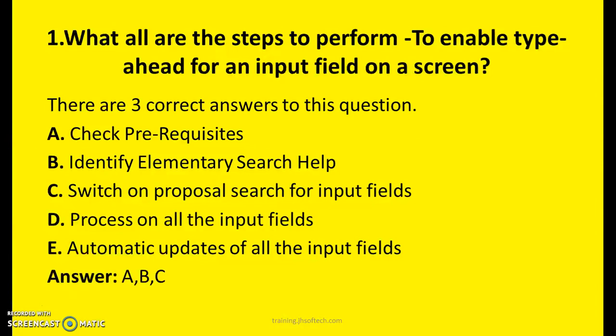The right answers are A, B, and C. What are all the steps to perform to enable type-ahead for an input field on a screen: A — Check prerequisites; B — Identify elementary search help; and C — Switch on proposal search for input fields.